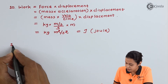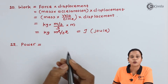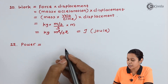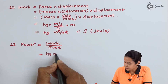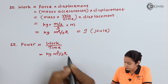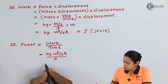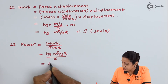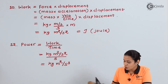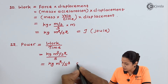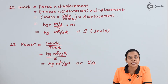The next physical quantity we will take is power. We know power is work upon time. The unit of work is kg meter square per second square, and the unit of time is second. So the final unit of power is kg meter square per second cube, or we can write joule per second.